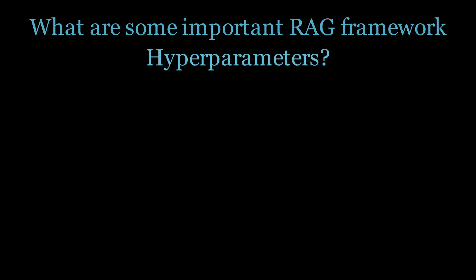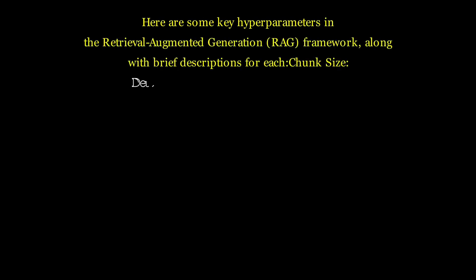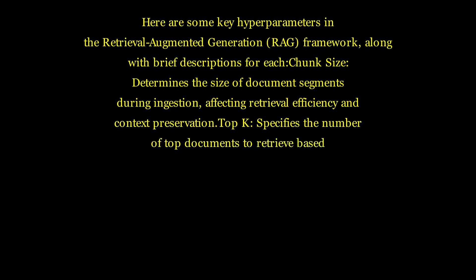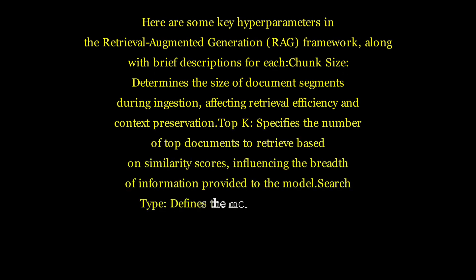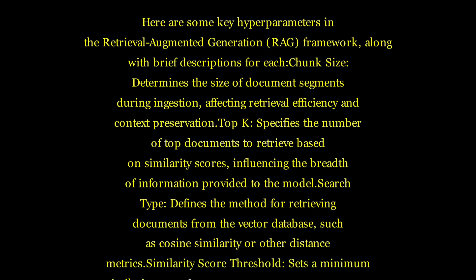What are some important RAG framework hyperparameters? Chunk size determines the size of document segments during ingestion, affecting retrieval efficiency and context preservation. Top-K specifies the number of top documents to retrieve based on similarity scores. Search type defines the method for retrieving documents, such as cosine similarity or other distance metrics. Similarity score threshold sets a minimum similarity score for retrieved documents. Overlap specifies the amount of overlap between chunks to enhance context continuity. Chain type specifies how retrieved documents are processed and integrated for response generation.